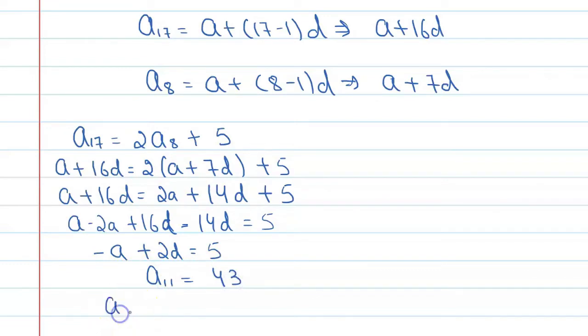As per the given condition that we have let, we say A plus 11 minus 1 into D, A11 is equal to 43. So A plus 10D equals 43. This is equation number 1. Minus A plus 2D equals 5 is equation number 2.